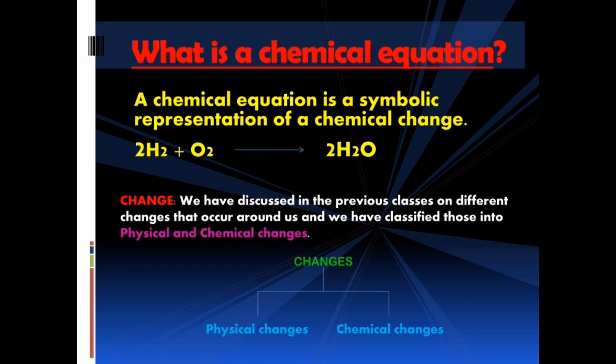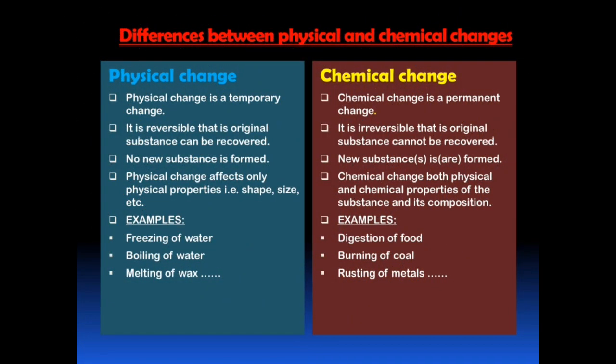In the above definition of chemical equation, the last word is 'change.' We need to discuss very broadly about this word — change. We have discussed in previous classes about different changes that occur around us, and we have classified those into physical and chemical changes. You can see a neat tree diagram on the screen. Now we will try to understand more about these physical and chemical changes.